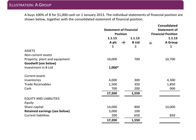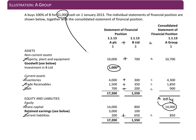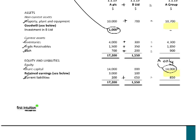For our assets — property, plant and equipment, inventories, trade receivables, and cash — we're simply adding the figures together. The share capital is that of A only, the parent company. Retained earnings we'll do a working for, and current liabilities we're simply adding together. In A's accounts we have the investment in B at cost of $1,000, but in the group accounts we're ignoring it. We now have two lines with missing figures: goodwill and retained earnings, which I'm going to show you how to calculate.